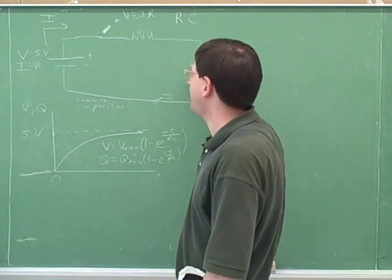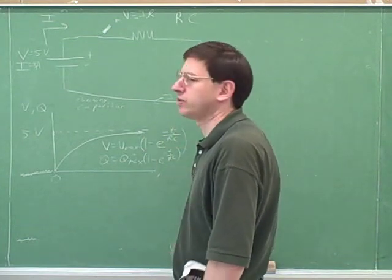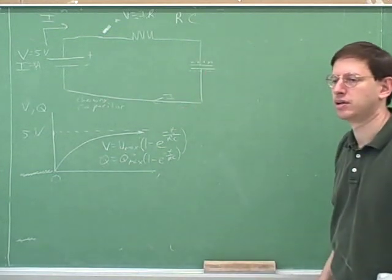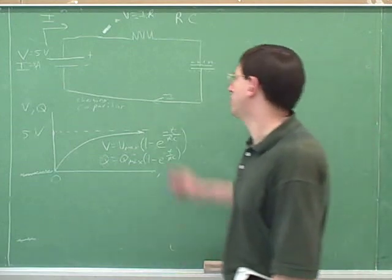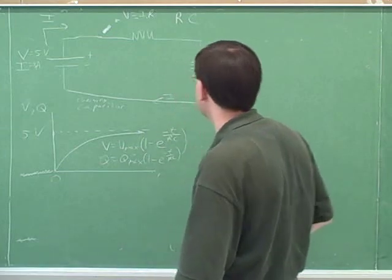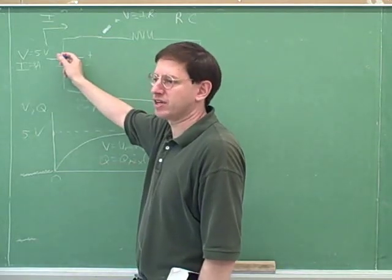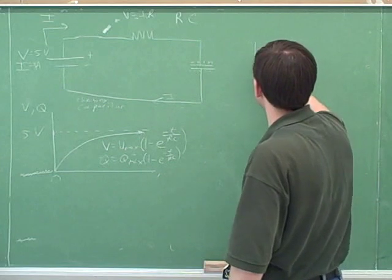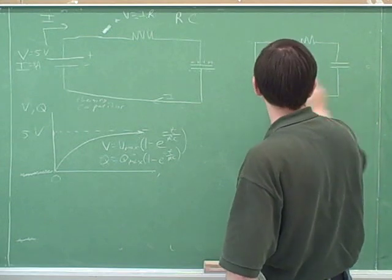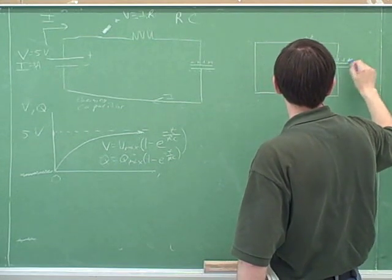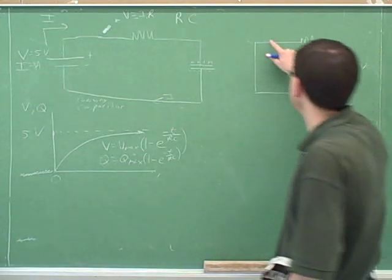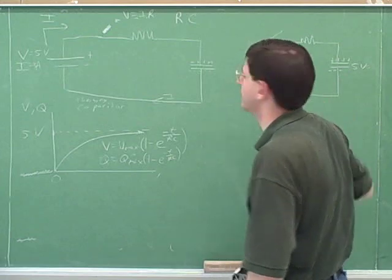Now let's say that we've got this capacitor fully charged. Once it's fully charged, what's its voltage going to be? If it's fully charged, its voltage would be five, because it's getting all the voltage and the resistor has none. Now let's suppose we remove the battery — the circuit looks like this, we've removed the battery and opened the circuit.